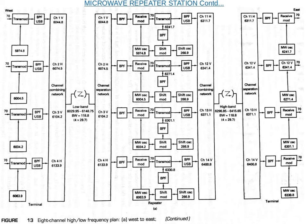In this example, we consider 8 channels — four high band channels and four low band channels. This figure shows the west-to-east direction transmission, where the terminal station transmits the low band frequency and the repeater station transmits the high band frequency.